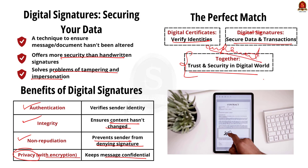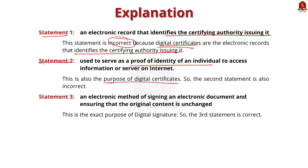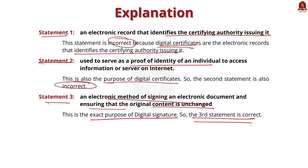Now coming back to the question, the first statement says 'an electronic record that identifies the certifying authority issuing it.' This statement is incorrect because digital certificates are the electronic records that identify the certifying authority issuing it. The second statement is also incorrect because it says it is used as a proof of identity of individuals to access information or a server on the internet — but this is the purpose of a digital certificate, not a digital signature. The third statement says 'an electronic method of signing an electronic document and ensuring that the original content is unchanged' — this is the exact purpose of a digital signature, so the third statement is correct. The correct answer is option C, three only.